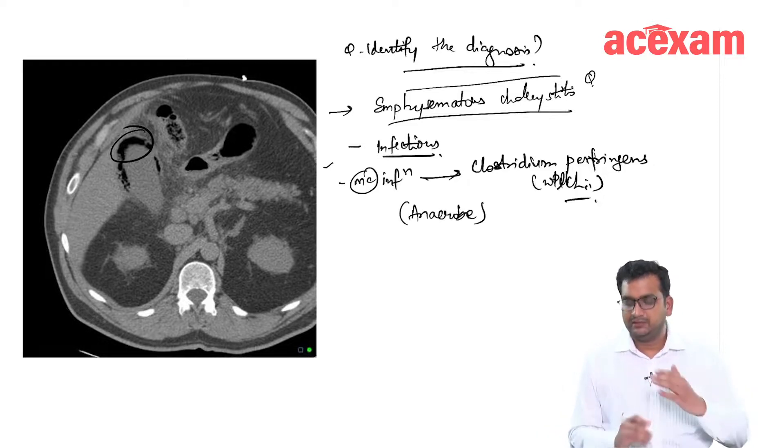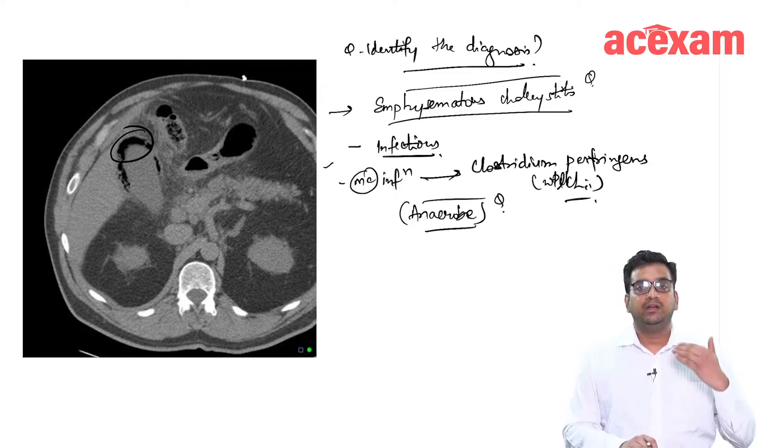Generally, the question asked is: do anaerobes cause emphysematous cholecystitis more commonly than aerobes? This is true.